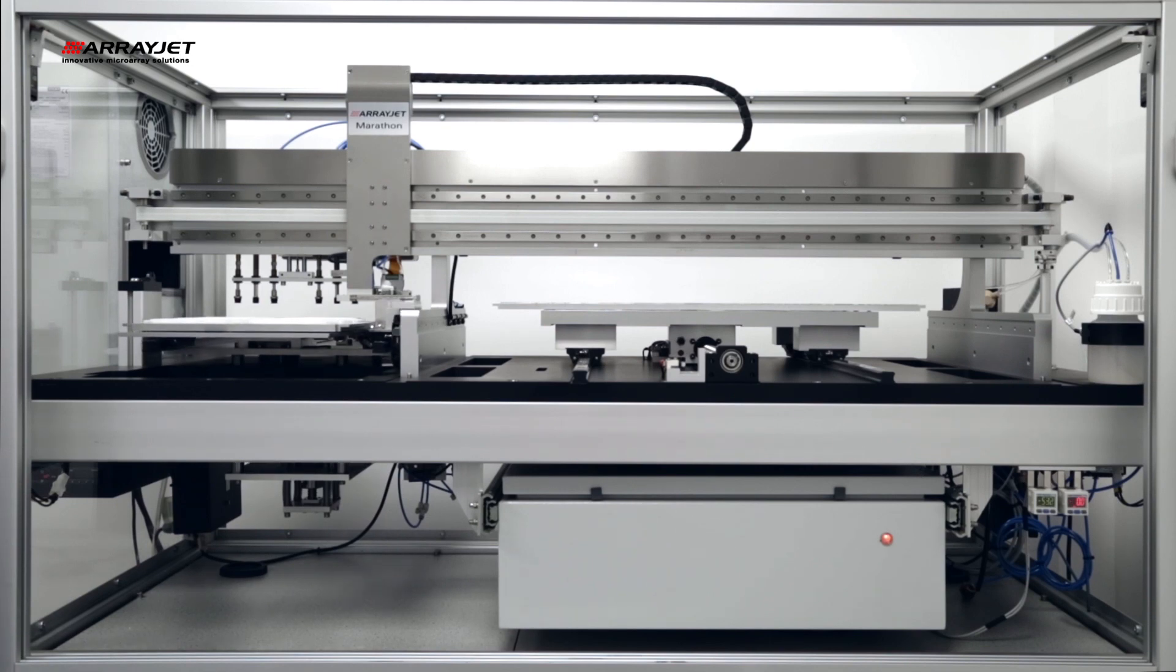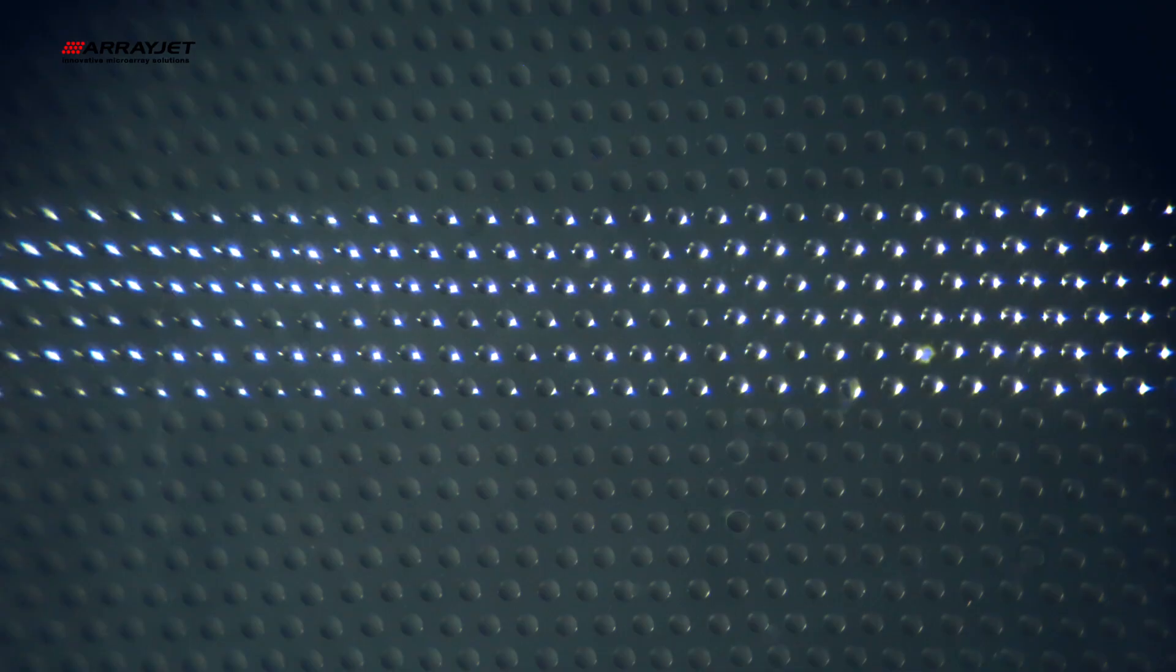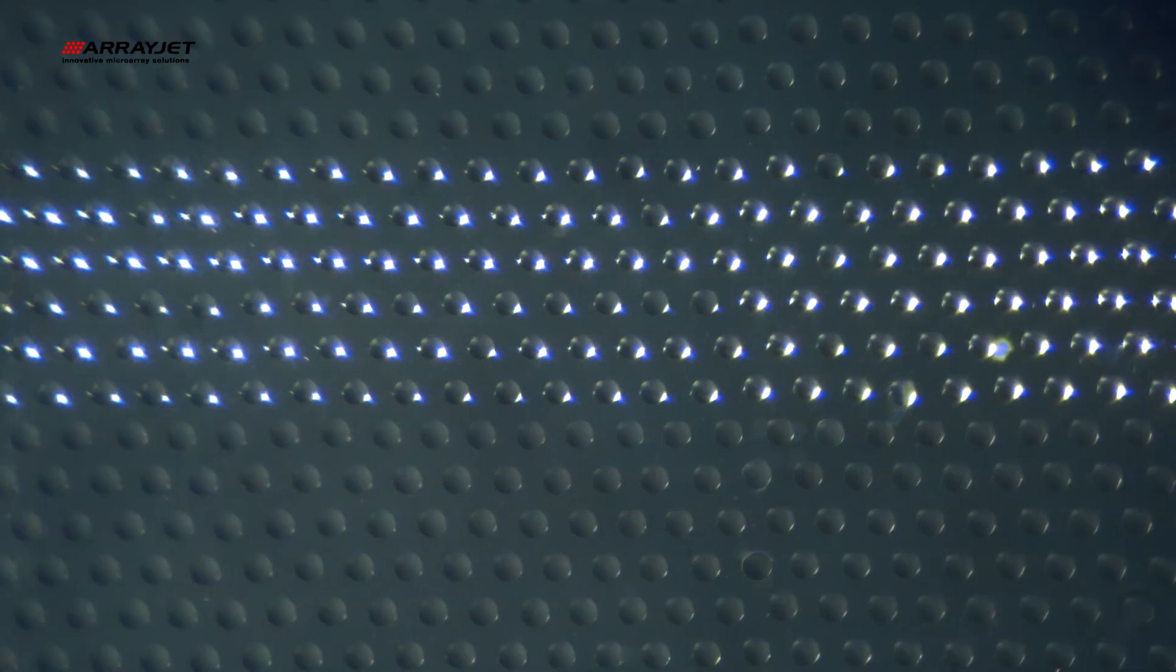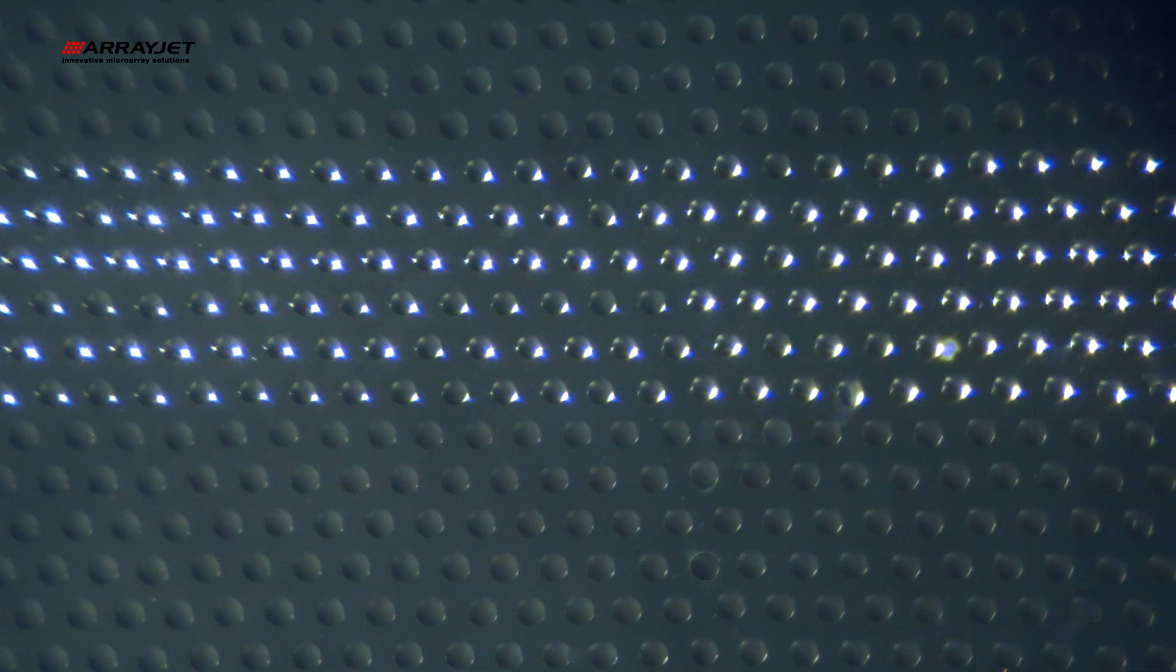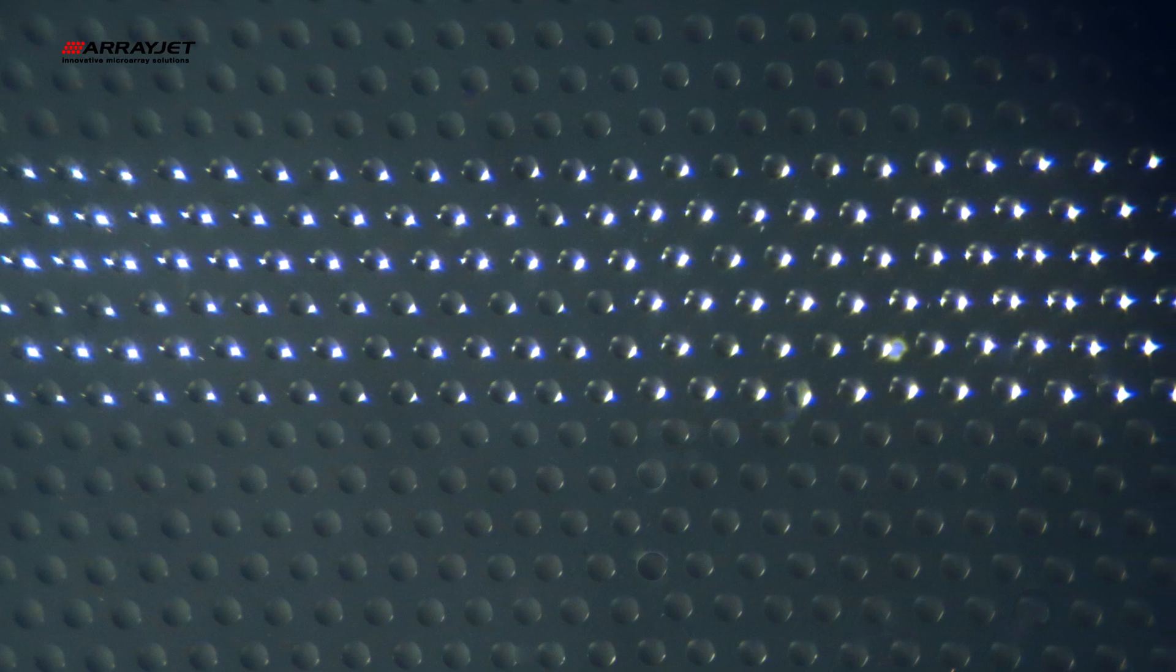Probe samples of varying viscosities are readily and consistently printed with ArrayJet technology. Precise and accurate spot volumes of 100 picolitres to 10 nanolitres with user-defined spacing of 1 micron increments.